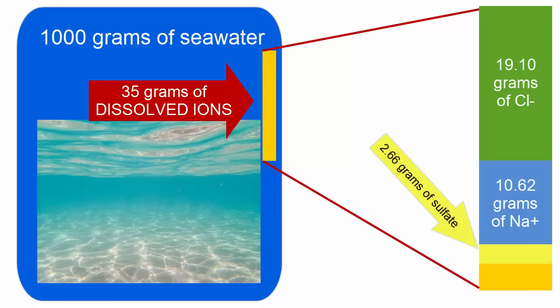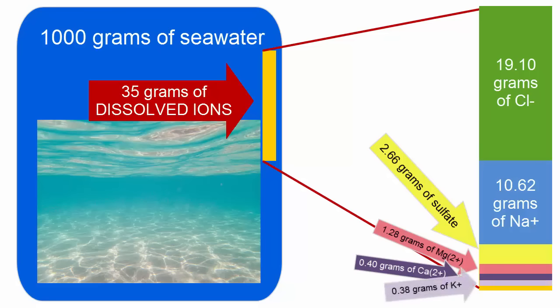2.66 grams are the sulfate ion. 1.28 the magnesium ion. 0.40 grams calcium ions. 0.38 grams potassium ions. And all other dissolved ions in the ocean make up less than 0.25 grams of every 1,000 grams of average seawater.